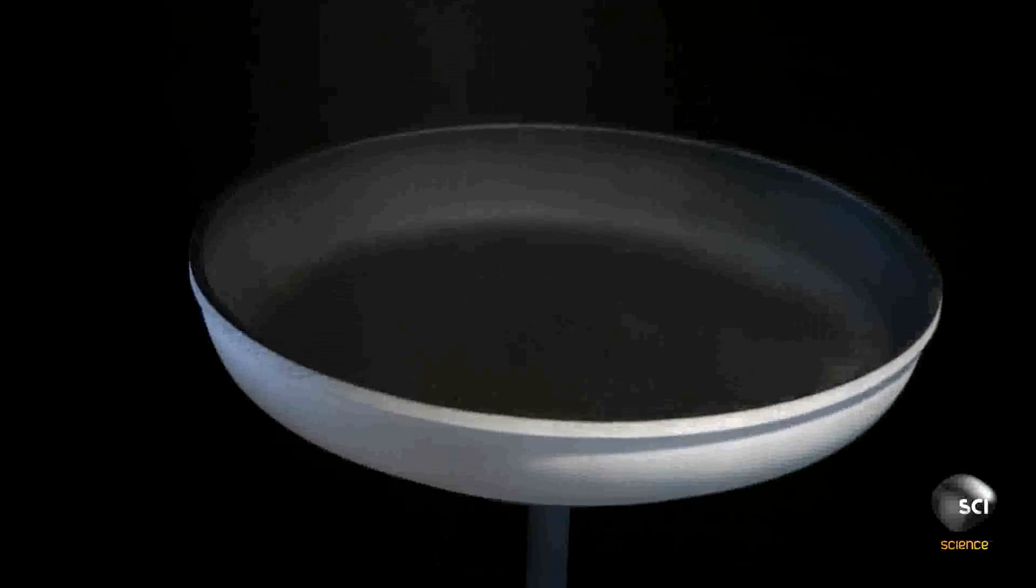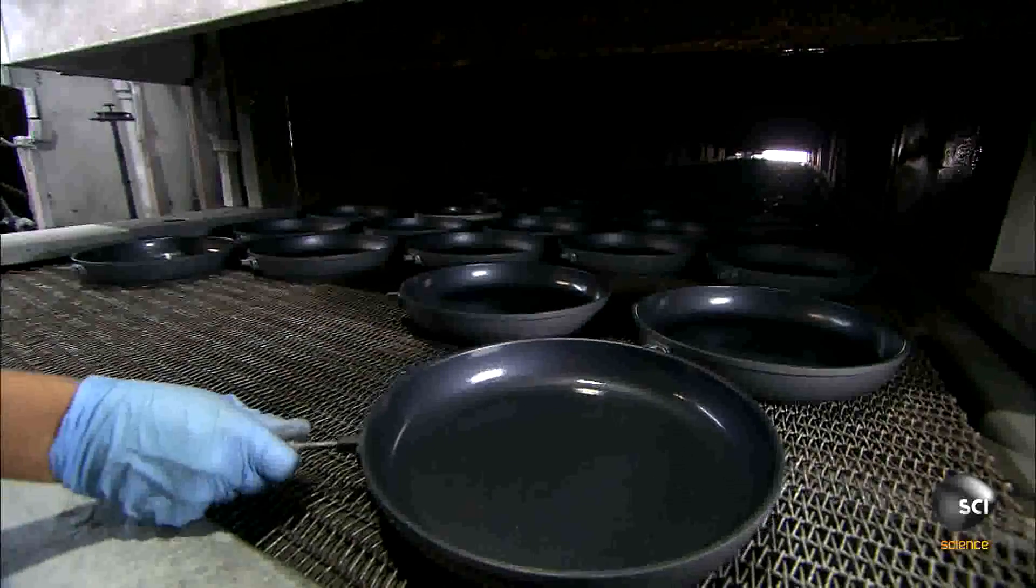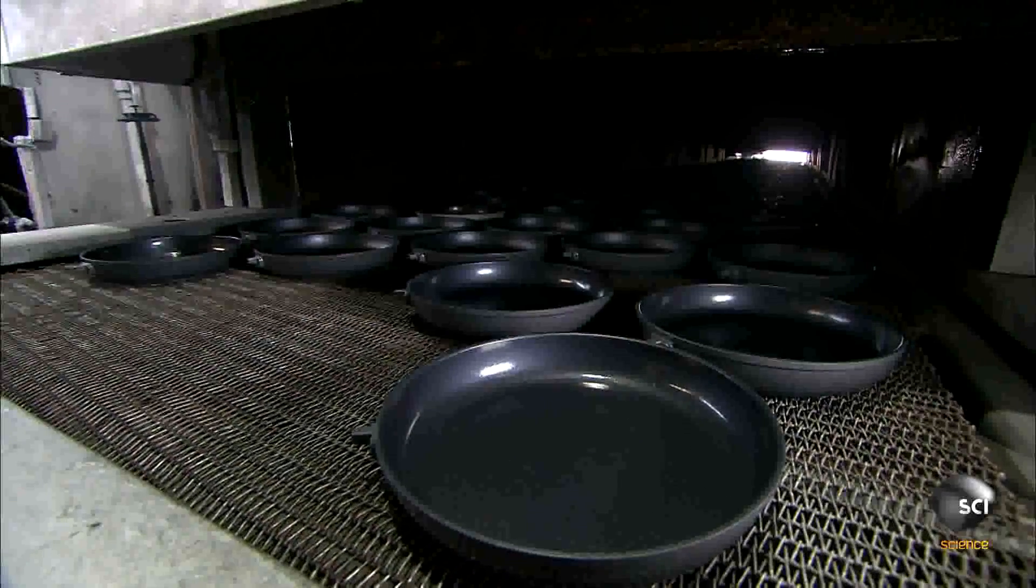Now a primer is applied. It allows the final nonstick coating to bond to the frying pan. Then the frying pans go through a furnace to bake the coatings onto the pans.